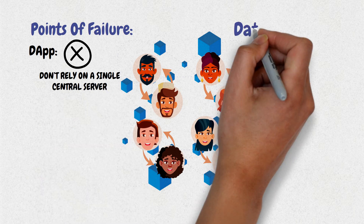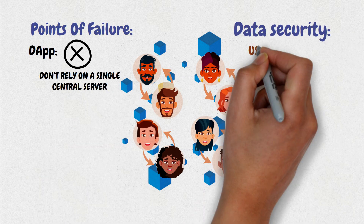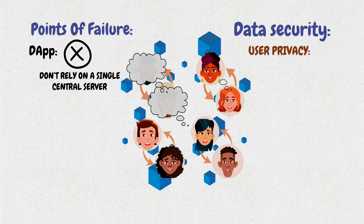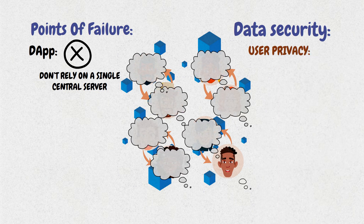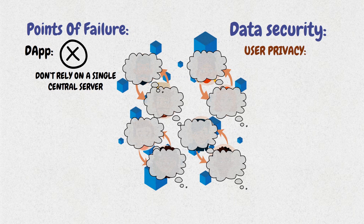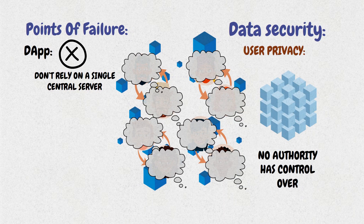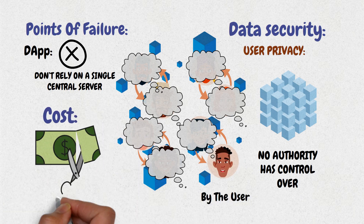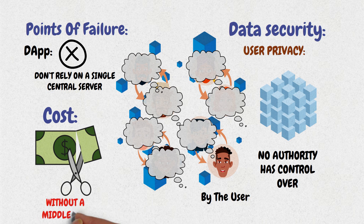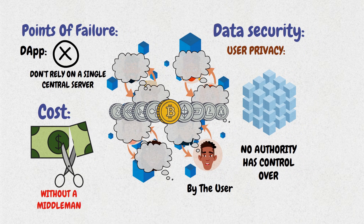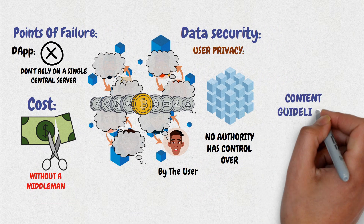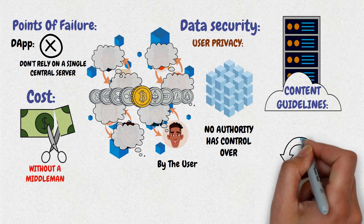Data security and user privacy: users don't have to provide real identities to create or interact with dApps. Users' information is stored on a shared database which no authority has control over. Information can only be decrypted by the user. Costs: dApps can be more financially efficient since they can function without a middleman to take profits from transactions — users can transact directly using cryptocurrency.